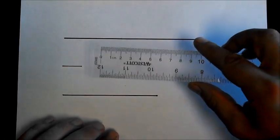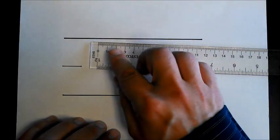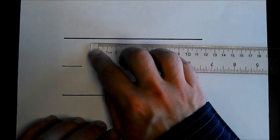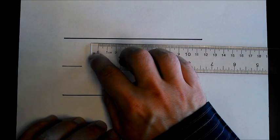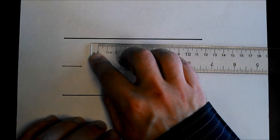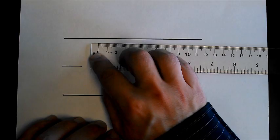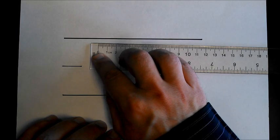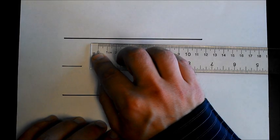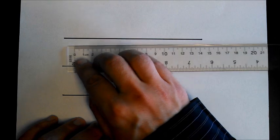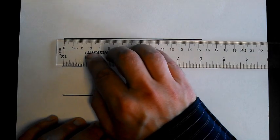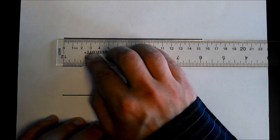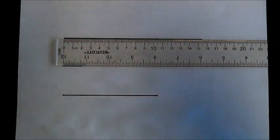The next thing to note is that on this one, there's a little space with no lines before the zero. Some rulers don't have that. You need to find where the zero is, where the start is. And for this one, it's right there. So we want to get this lined up right here next to it.